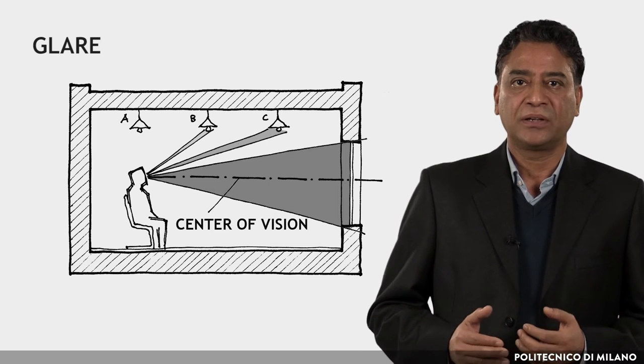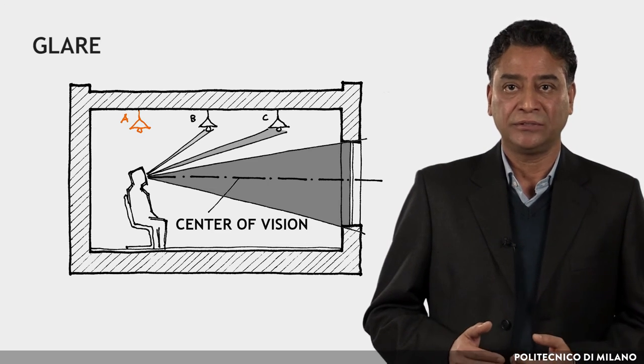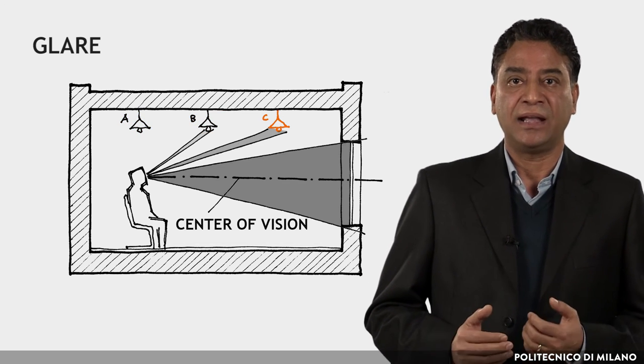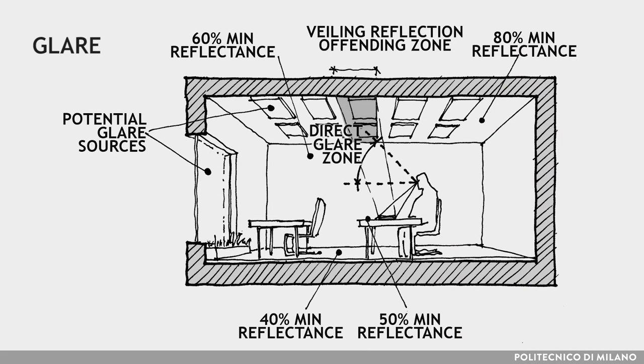In the figure, the sources are progressively more problematic from A, no problem, gradually to B, C, and the windows causing glare. Some potential sources of glare and recommended reflectance values are shown in the figure.